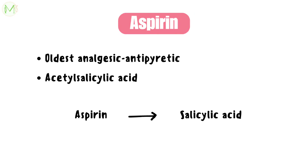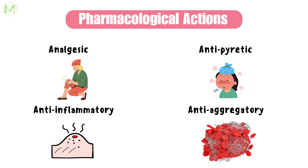Aspirin is one of the oldest analgesic anti-inflammatory drugs. According to its chemical structure, it is known as Acetylsalicylic Acid. When taken, it is converted into salicylic acid in the body, which performs most of aspirin's action. Mostly, they act as analgesic, antipyretic, anti-inflammatory, and anti-aggregatory.